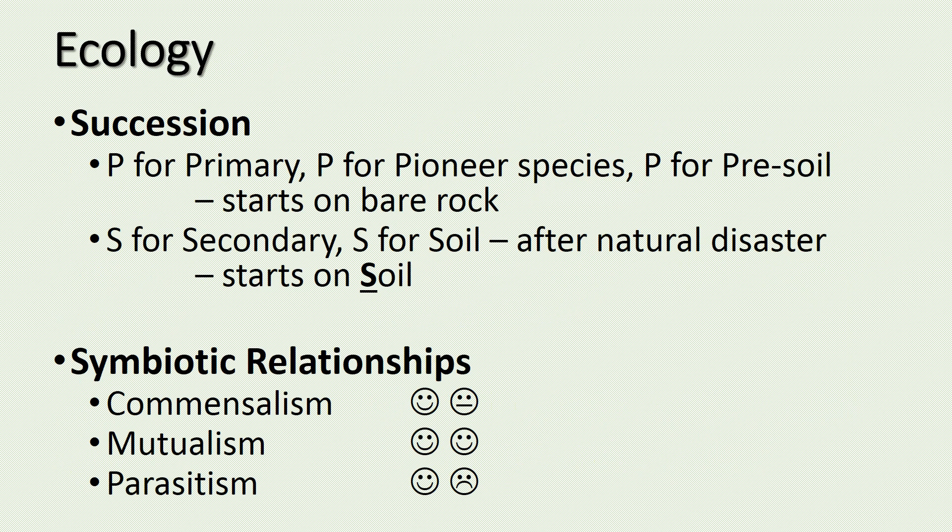There are two types of ecological succession, which is the building or rebuilding of a community over time. Primary succession: P for primary, P for pioneer species, or pre-soil. This type of succession will always start out on bare rock, which will need to be broken down by your pioneer species of lichens and mosses. Secondary succession: S for secondary, S for soil. This always occurs after some type of natural disaster and will always start with a layer of soil.